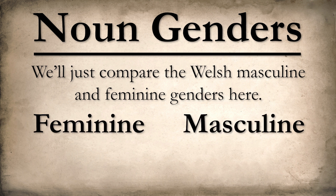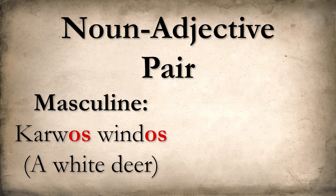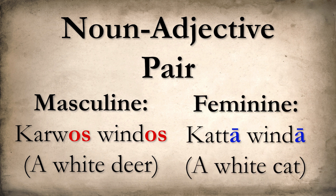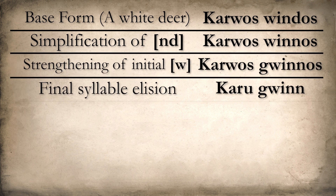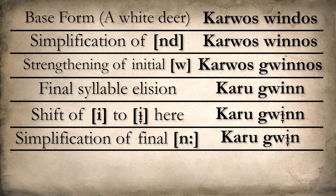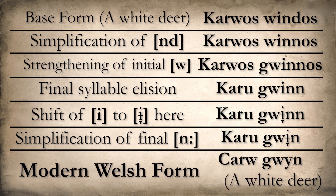We'll just compare the Welsh masculine and feminine genders here, since the neuter generally collapsed with the masculine class over the course of Welsh history. So with a masculine noun-adjective pair in Proto-Celtic, we have 'Carvus windus', a white deer — or really 'a deer white' because of the noun-adjective order in the Celtic languages. Nothing super interesting happens with this pair. It just evolves from 'Carvus windus' to 'Carvus windus', 'Carvus guinnus', 'Caru guinn', and after converting to modern Welsh spelling conventions, we get the present-day 'Caru guin' — still a white deer.